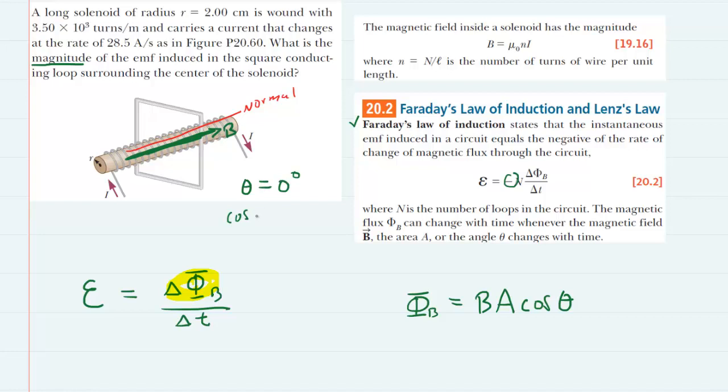Of course, the cosine of zero degrees is just one. So this value can be disregarded in our case, and we can simplify the magnetic flux to equal the magnetic field multiplied by the area.